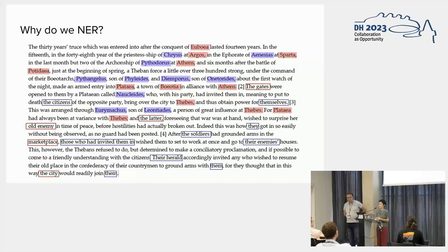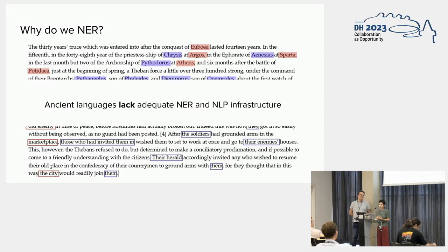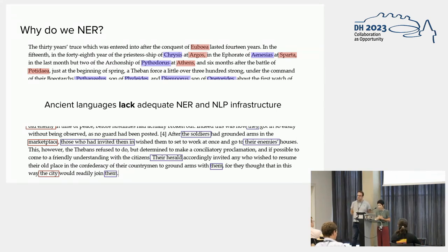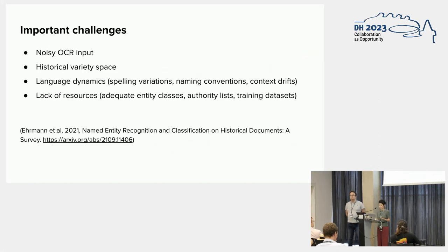The starting point for our presentation is something that may be familiar to a lot of people in the room. Named entity recognition has pretty well-developed workflows and pipelines for many modern languages — not all of them, but many. But for ancient languages, and ancient Greek in this case, we don't have adequate named entity and NLP infrastructure in general, which creates an obstacle to extracting, classifying, and recognizing named entities across texts.